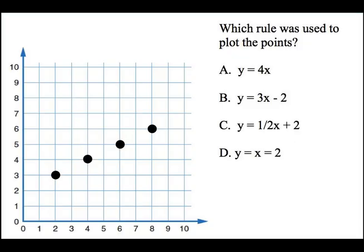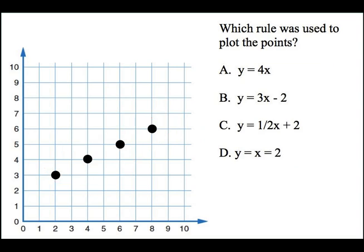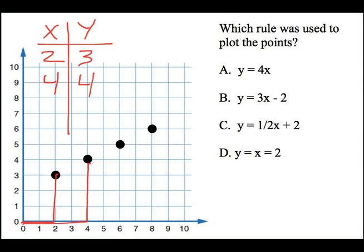For this problem, we're going to kind of go the opposite way. We're going to look at our choices, and we're going to see if any of these rules match our coordinate points or our ordered pairs. So our first thing is always, always, always to make an XY chart. Take our points and put them into a chart. So our first point is 2, 3. Our next point is 4, 4. Our next point is 6, 5. And our last point is 8, 6.